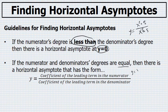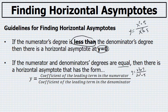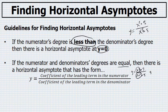For example, in the equation y equals x squared plus 7 over 2x squared plus 5, there is an x squared in both the numerator and denominator, so the degrees are both squared. Therefore there is a horizontal asymptote, and the leading coefficient of the numerator is 1.